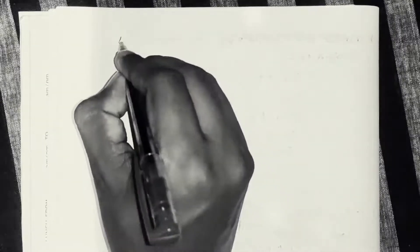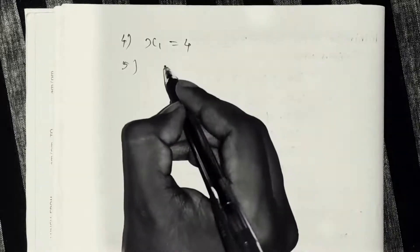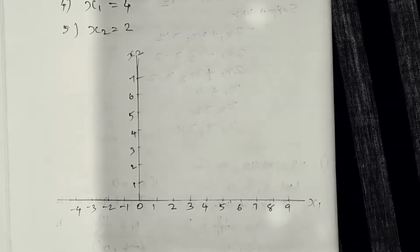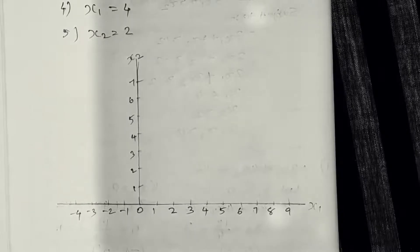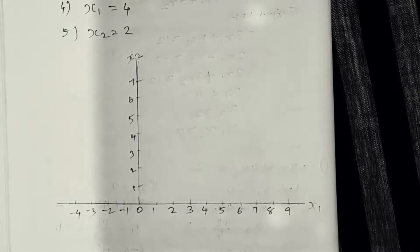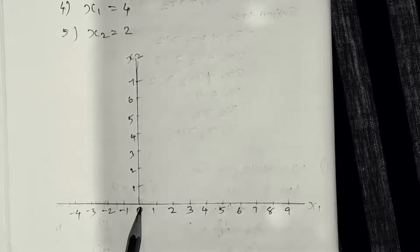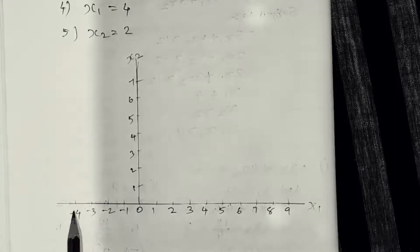For equation four, x1 less than or equal to 4, so we have the vertical line x1 equals 4. For equation five, x2 greater than or equal to 2, so we have the horizontal line x2 equals 2. We now have all the intercept values needed, and we can plot these on a graph.